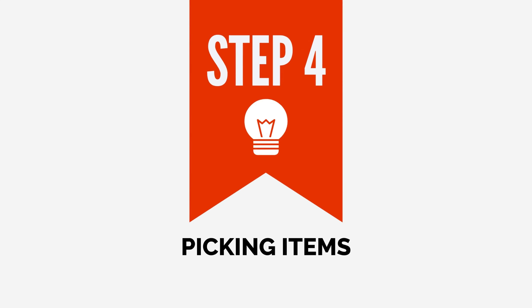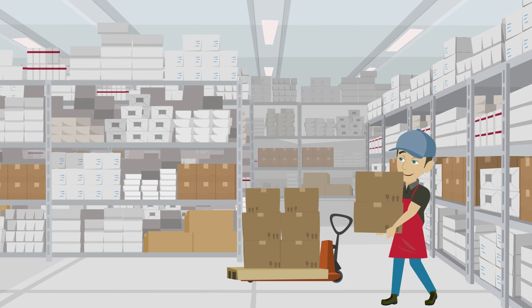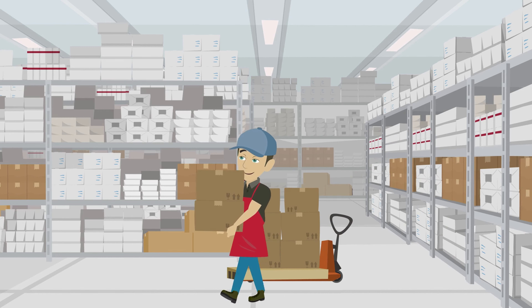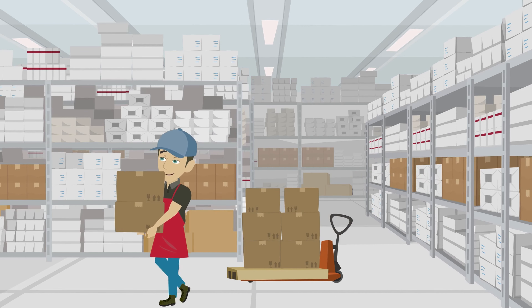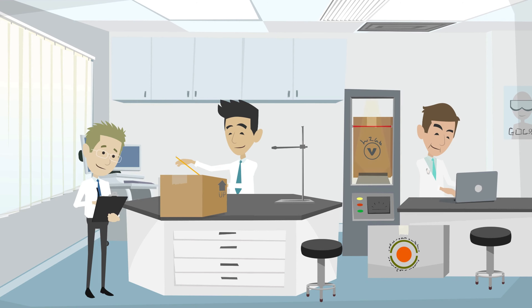Step 4: Picking items. When an order is placed, the items are picked from the warehouse or retail shelves and prepared for production or shipment. This may involve verifying the quantity and quality of the items being picked and updating the inventory management system accordingly.